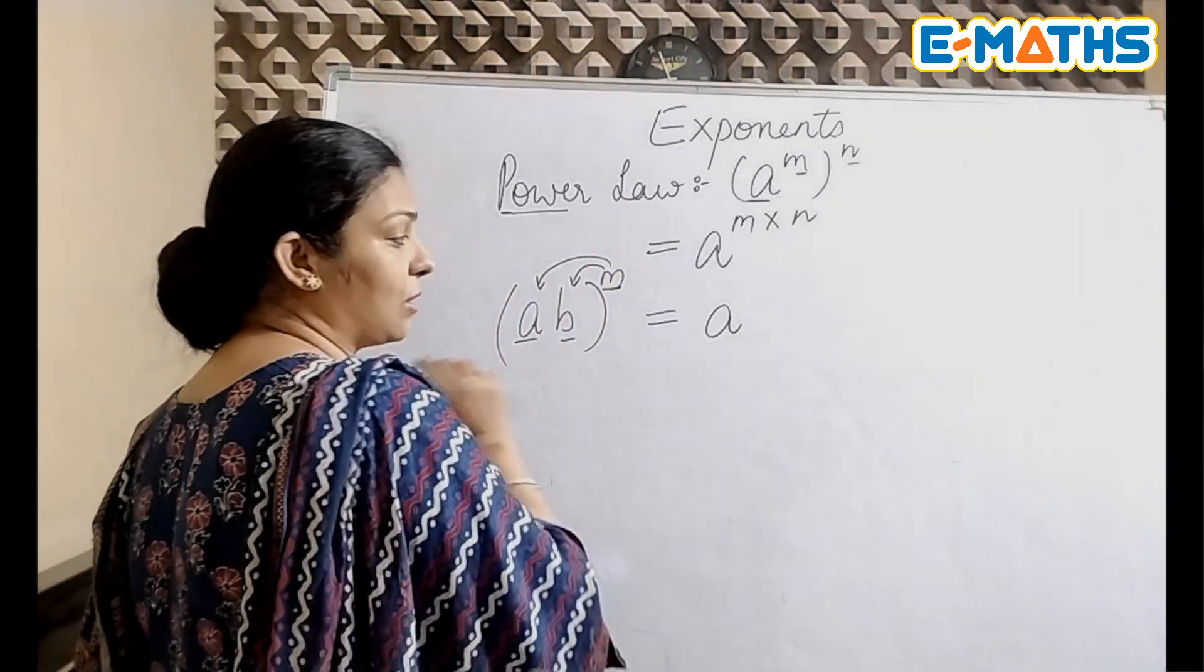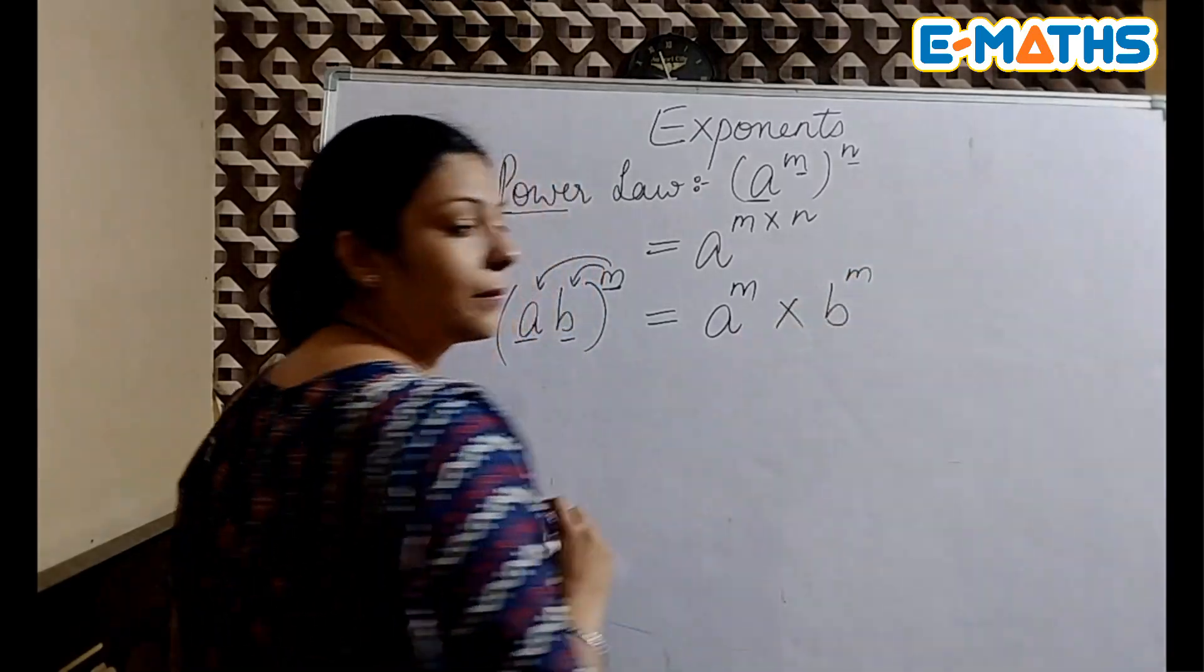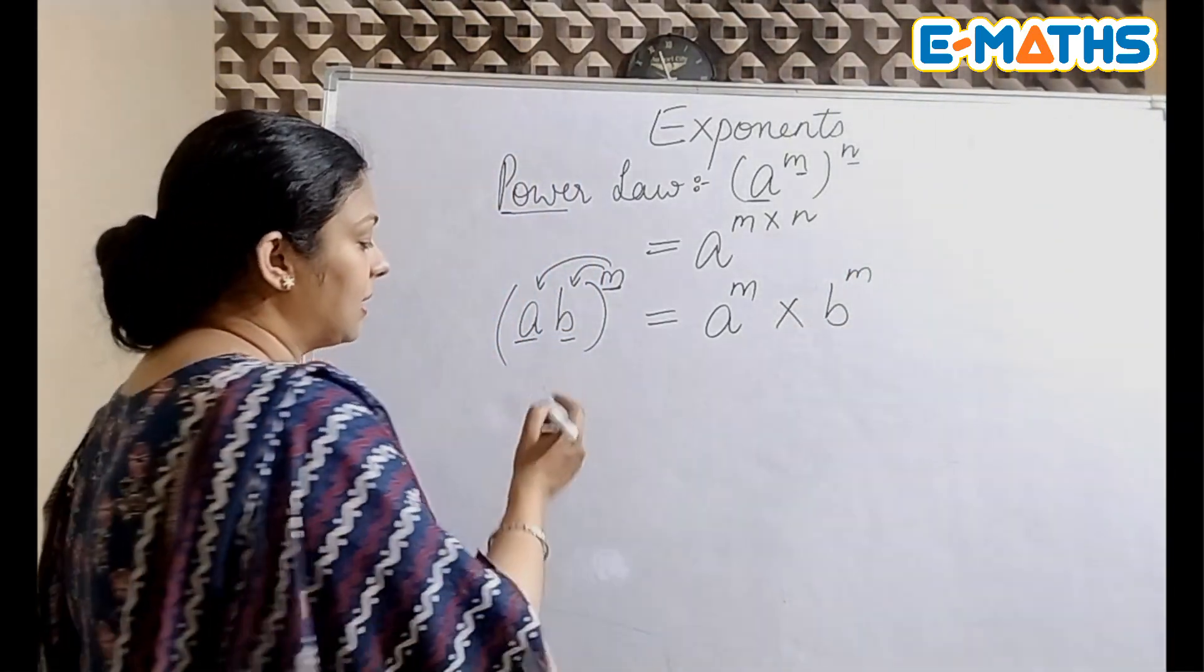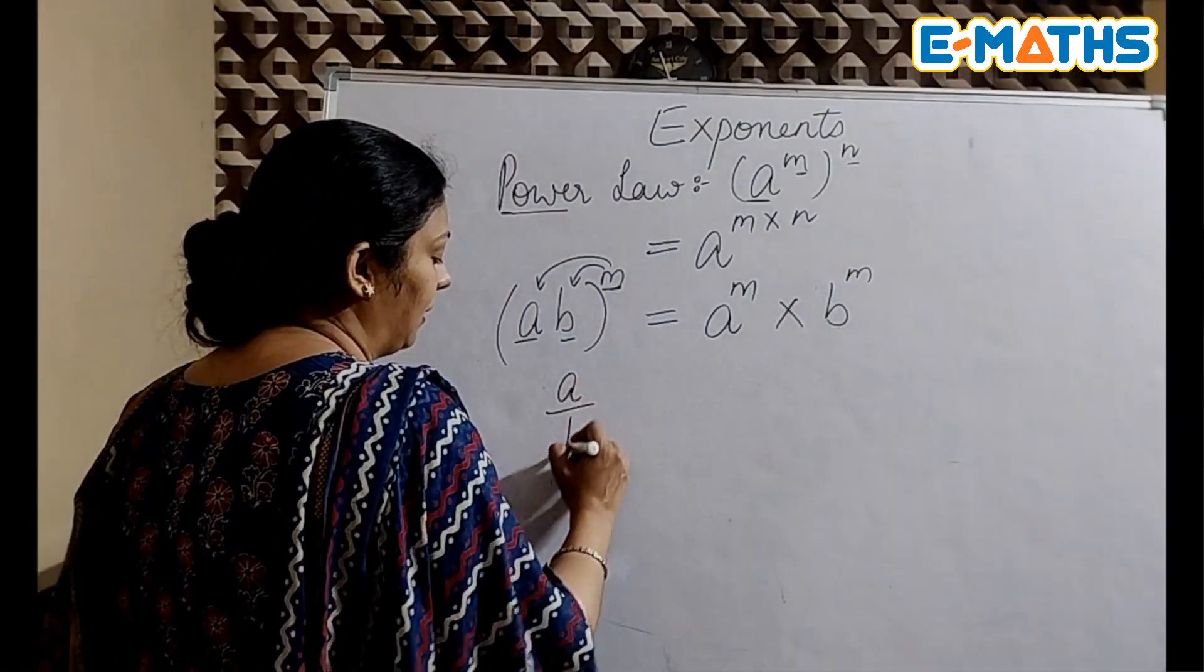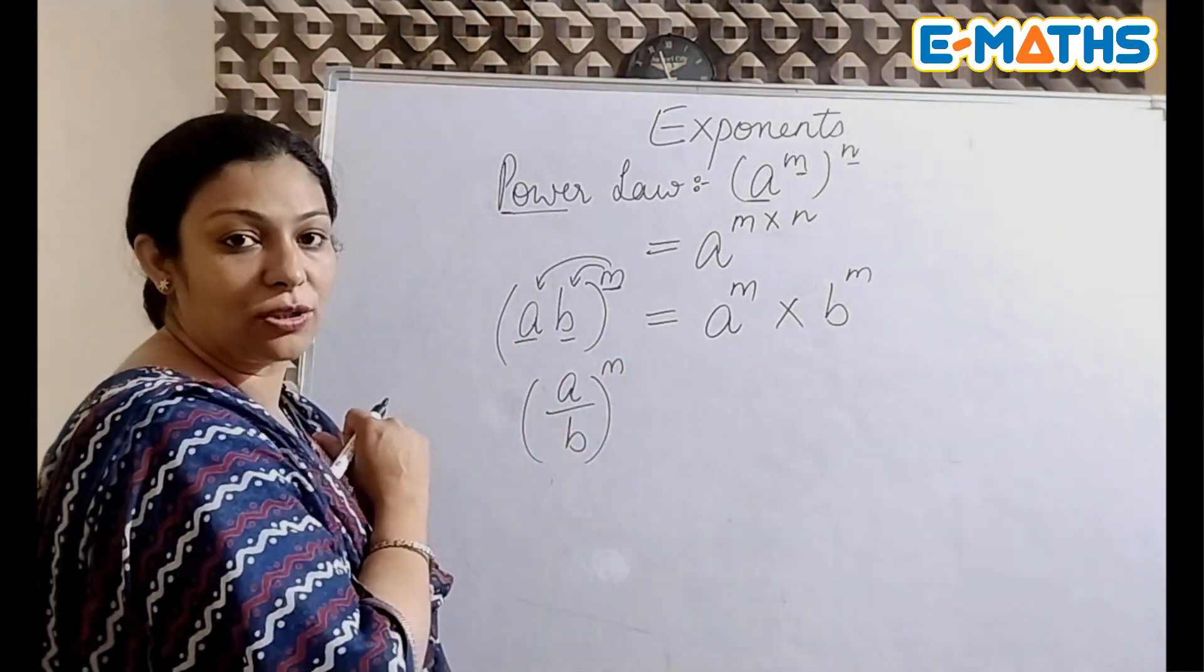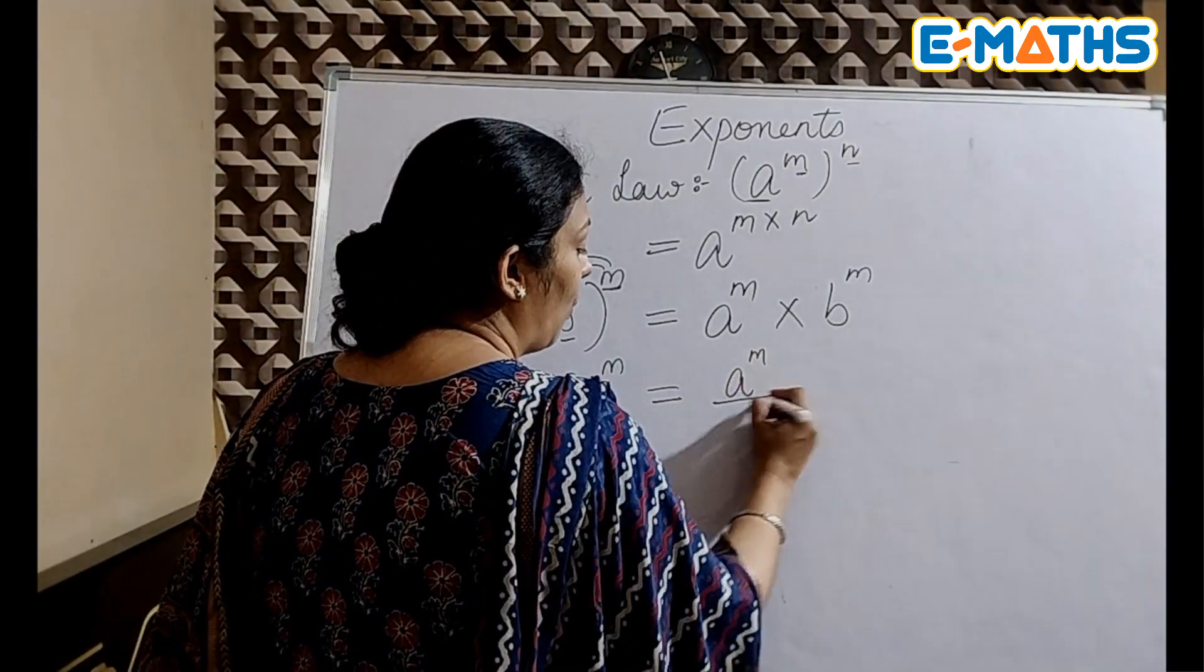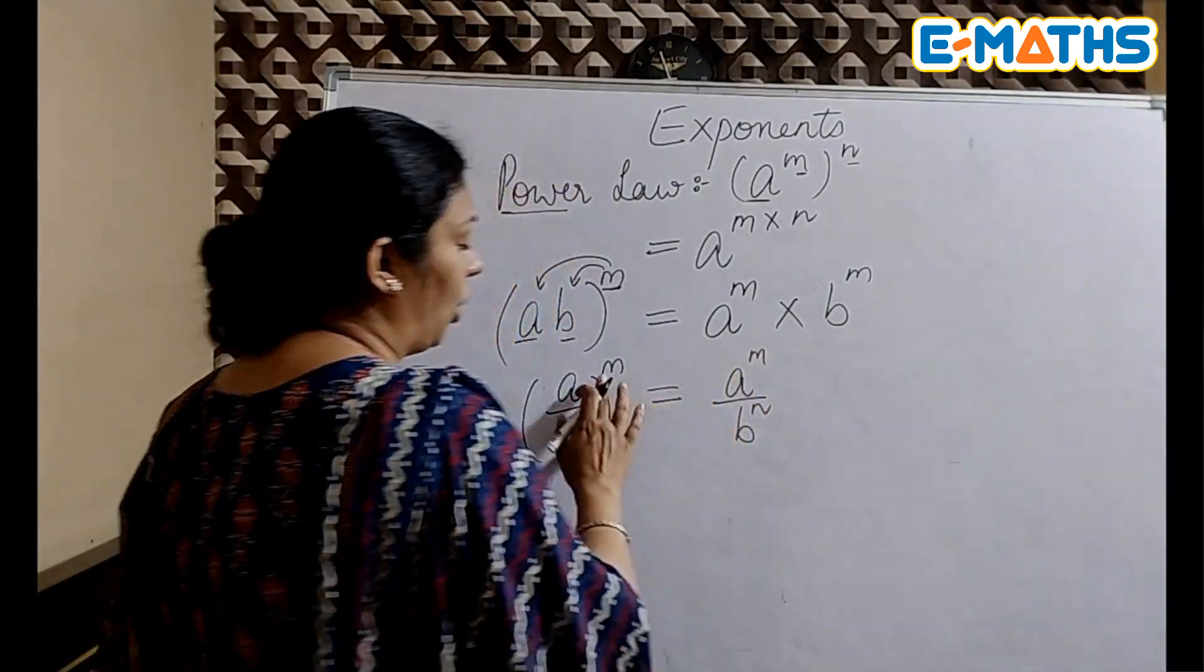You will simply open up the bracket, and to do that we need to multiply the two powers which were there on that particular term. So this is all about power law. Now there is one more law where you might have two variables, then there is a bracket and it has one single power.